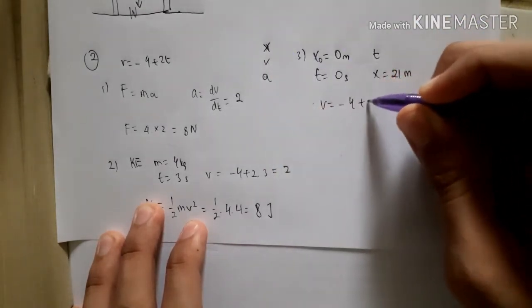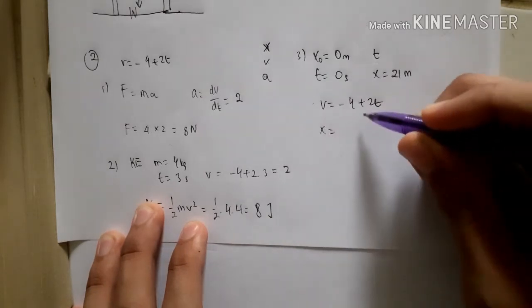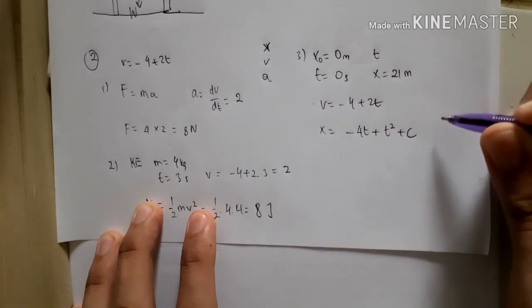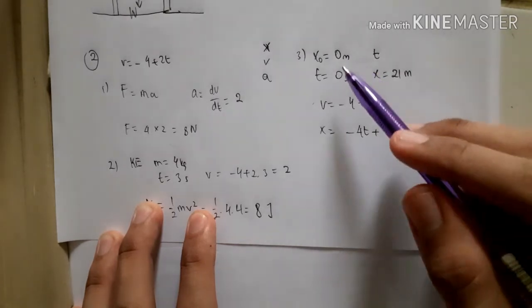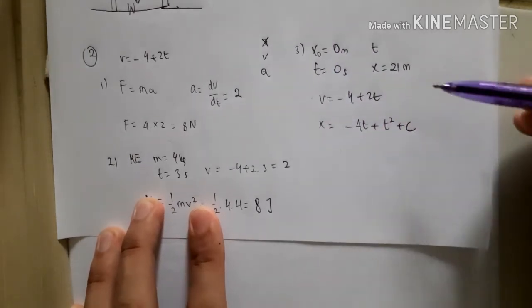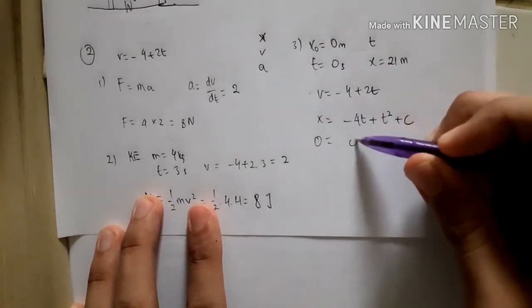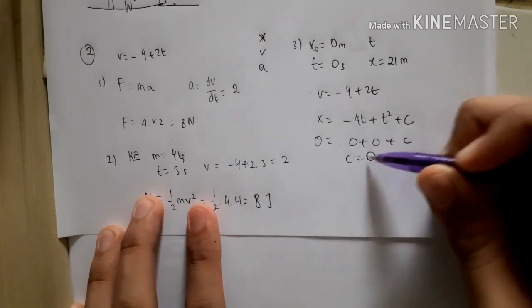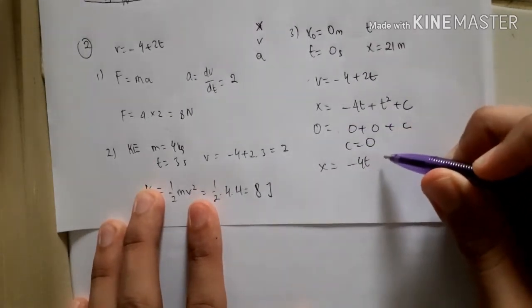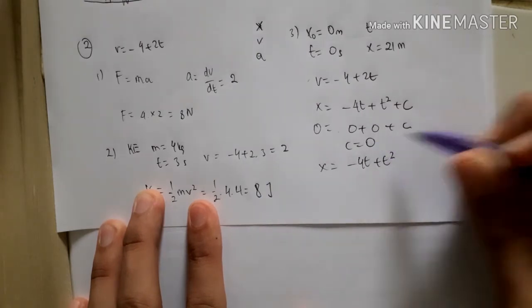So from v, so x is, we integrate this, minus 4t plus t squared plus c, right? But, because we know that the initial position when t is 0 is 0, okay? So, there's 0 equals 0 plus 0 plus c. c is 0, therefore, the equation is minus 4t plus t squared, and c is 0.